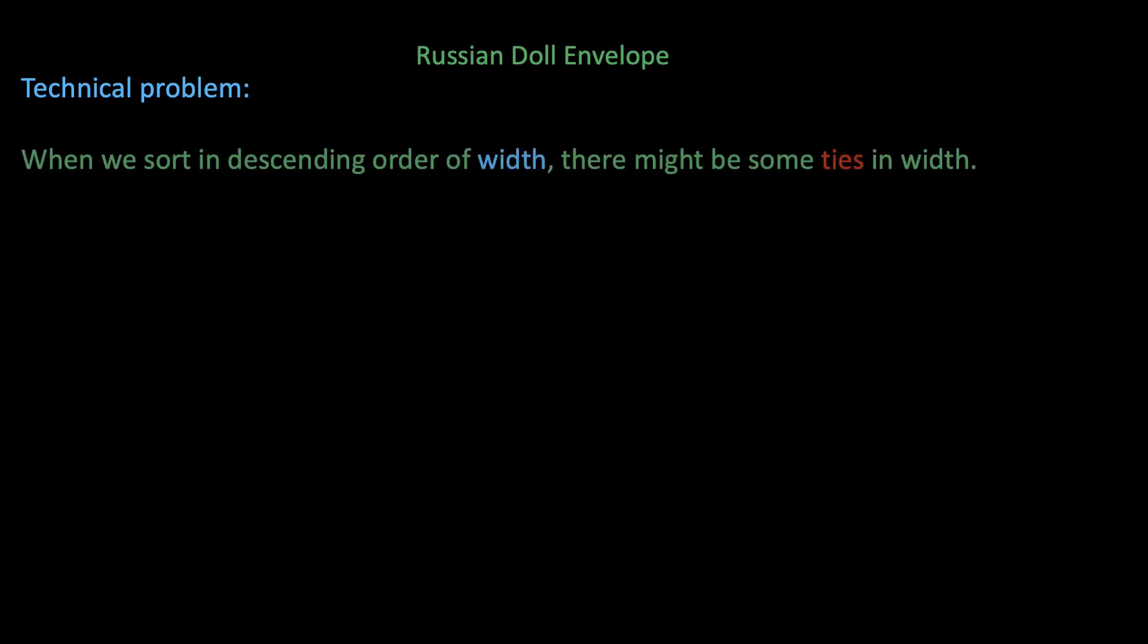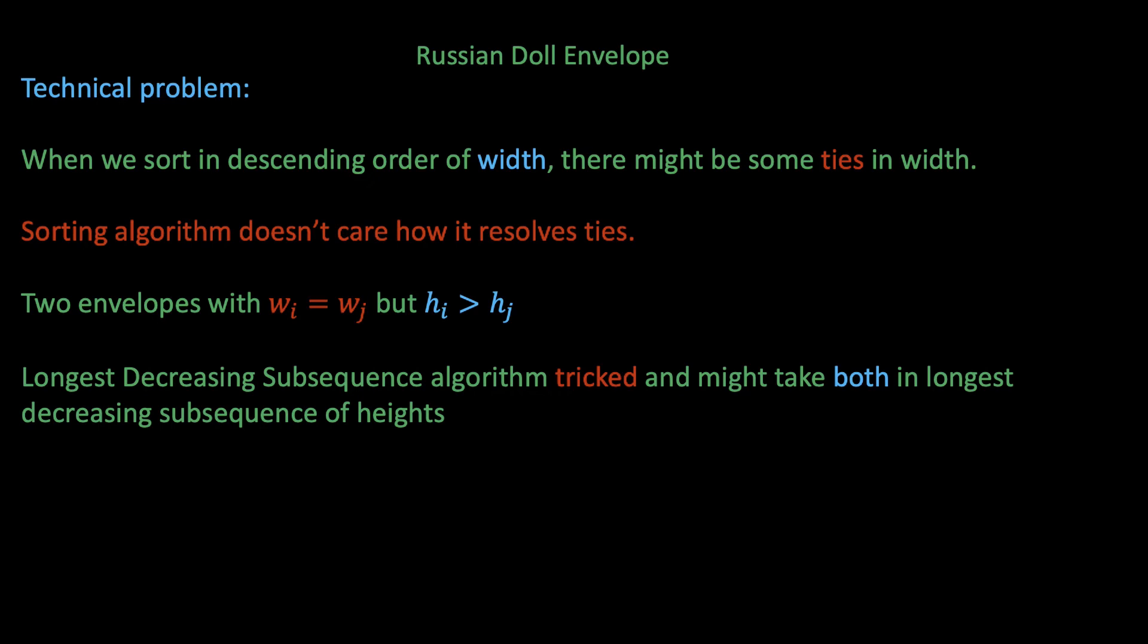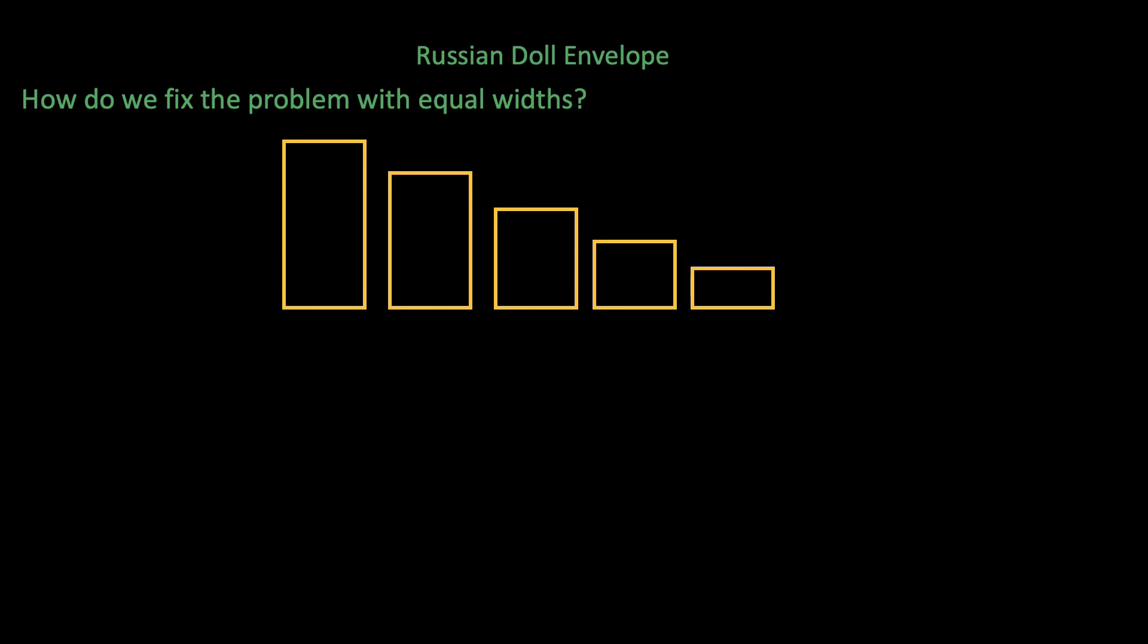If you think about it carefully, you might notice that this problem only happens for rectangles with equal width. The sorting algorithm doesn't really care how it solves ties in the width. So the longest decreasing subsequence on the heights might have two envelopes with wi equals wj but hi less than hj. In other words, the longest decreasing subsequence algorithm is tricked and might take two or more rectangles with the same width but decreasing heights. So how do we fix this problem? Take a minute and think about a way to fix this problem for envelopes with equal width. Think of a secondary sorting approach that we could sort envelopes with equal width on to prevent the longest decreasing subsequence algorithm from choosing more than one envelope with the same width.